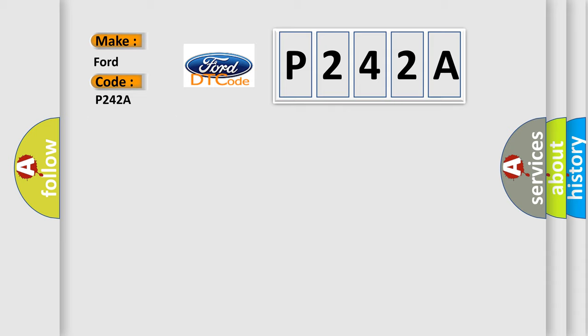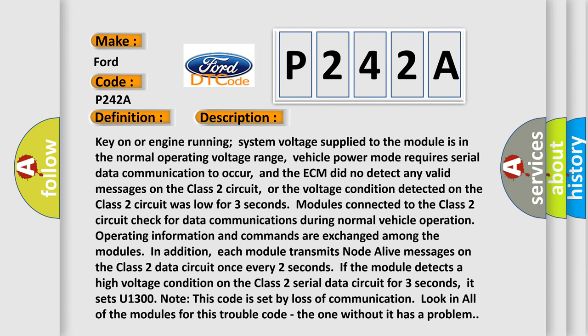The basic definition is Class 2 circuit short to battery. Key on or engine running, system voltage supplied to the module is in the normal operating voltage range. Vehicle power mode requires serial data communication to occur, and the ECM did not detect any valid messages on the Class 2 circuit, or the voltage condition detected on the Class 2 circuit was low for three seconds.